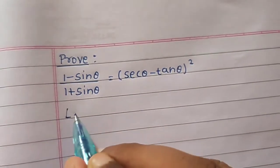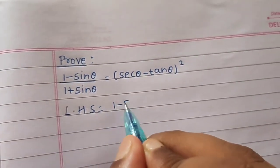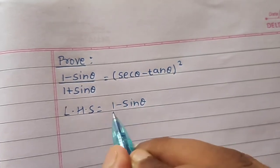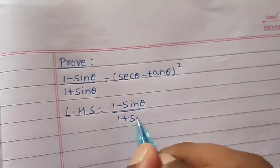We will start with LHS. We have LHS equals to 1 minus sin theta divided by 1 plus sin theta.